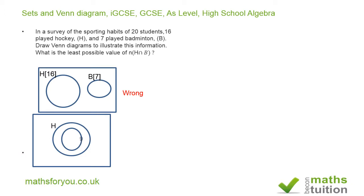In the next diagram, I have H for hockey and B for badminton. Nine students play just hockey only, and seven students play both hockey and badminton. Adding 9 and 7 gives 16, which accounts for all hockey players. Since there are 20 students total, four students play neither hockey nor badminton. In this case, the number who play both is seven.